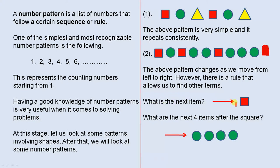So what is the next item? It's a square. What are the next four items after the square? Square, one circle, square, two circles, square, three circles, square, four circles. So there they are.